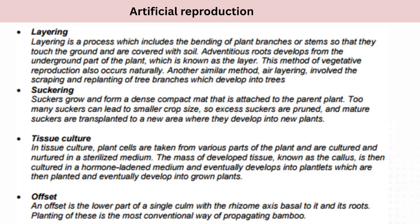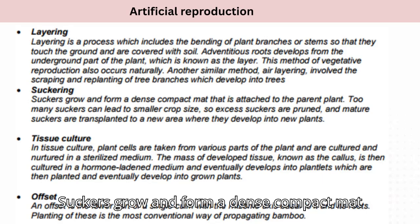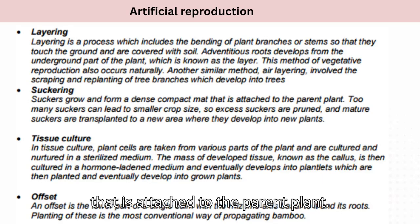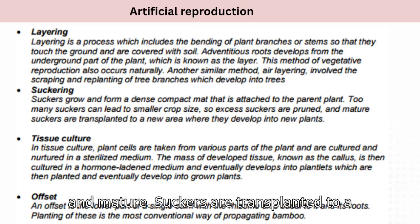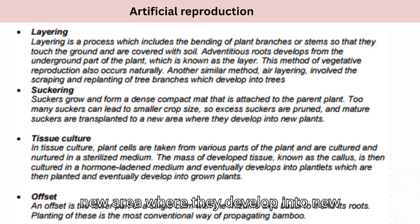Suckering: suckers grow and form a dense, compact mat that is attached to the parent plant. Many suckers can lead to smaller crop size, so excess suckers are pruned, and mature suckers are transplanted to a new area where they develop into new plants.